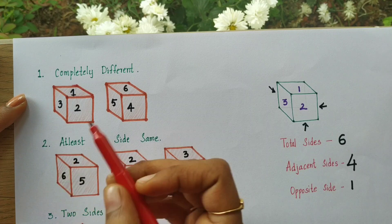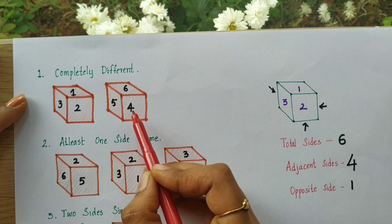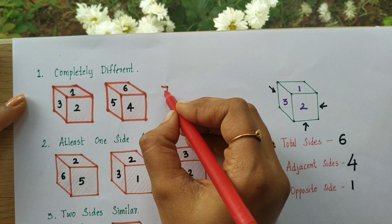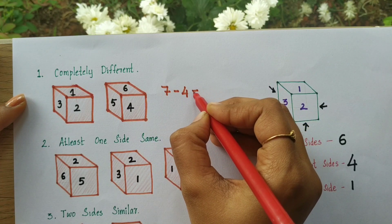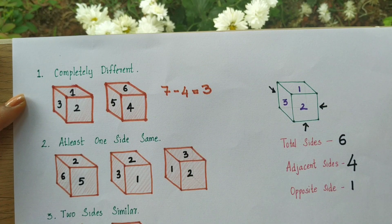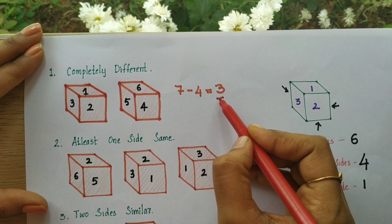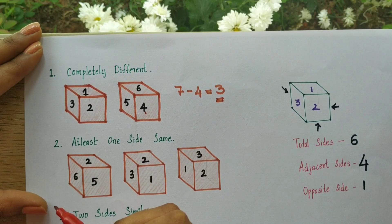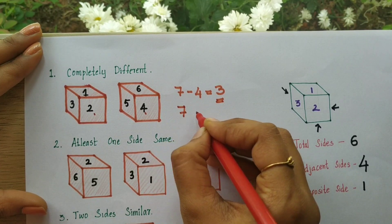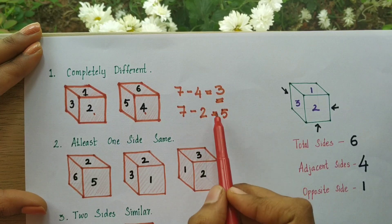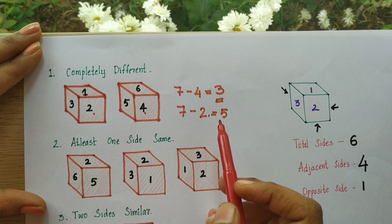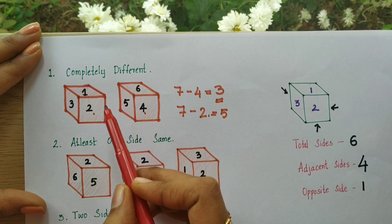What is the trick? If you have to find the opposite side of four, you subtract the particular number from seven. So the answer is three — three will be the opposite side of four. For example, what is the opposite of two? Seven minus two is five, so the opposite of two is five. This applies only when it is a standard dice.